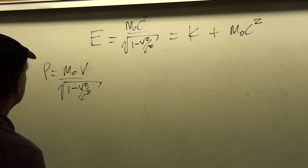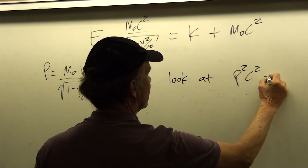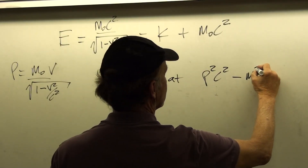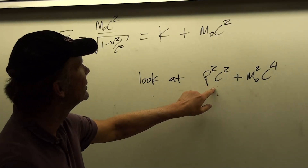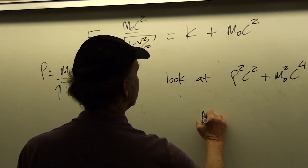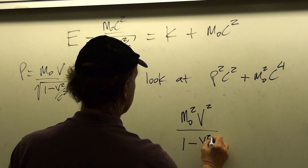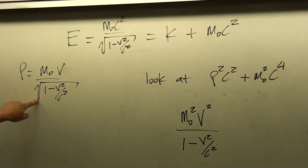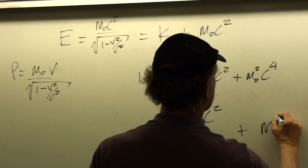What I'd like to do here is just take and look at this term: p squared c squared plus m-naught squared c to the fourth. Let's just look at what this ends up being from what we already know in terms of our relativistic momentum. So p squared is going to be m-naught squared v squared divided by 1 minus v squared over c squared, times c squared, plus m-naught squared c to the fourth.